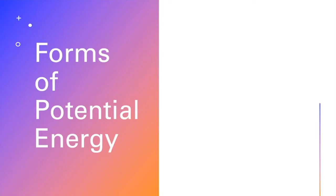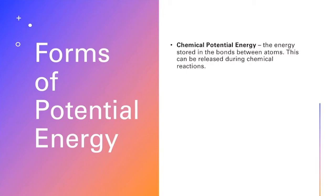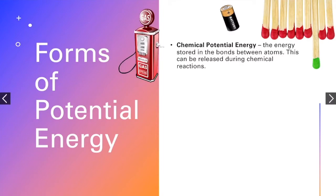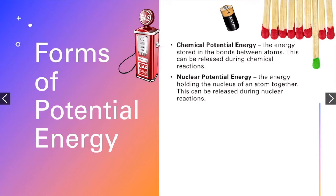So let's talk about some forms of potential energy first. The first one is chemical potential energy—energy that's stored in the bonds between atoms that can be released during chemical reactions. Some examples are matches, batteries, or the gasoline that you use to power your cars. Then we have nuclear potential energy, which is the energy holding the nucleus of an atom together that can be released during nuclear reactions. Here's the nucleus of an atom showing the strong nuclear force that's holding those particles together. This takes a tremendous amount of energy, and if we were to release that energy, it would be a lot of energy.